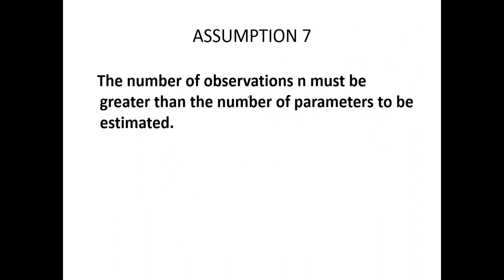Assumption number 7: the number of observations must be greater than the number of parameters to be estimated. So if n is the number of observations and p is the number of parameters, n has to be greater than p. You cannot have, let's say, 10 parameters to be estimated from 9 observations—that's not possible.